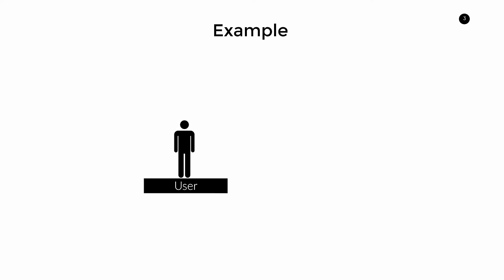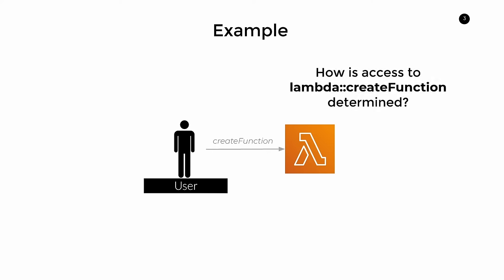Let's assume we have a user — say it's me, Daniel — and I'm trying to access a particular resource, say a Lambda function in AWS. I want to call a particular API, I want to perform a certain action on this Lambda function. I want to create a function — create an instance of my Lambda function. So how is access to Lambda's CreateFunction even determined, and how do we specify whether or not Daniel has access? Well, if you have a brand new user account and you don't specify any permissions, when you try to perform this action you'll get an access denied error.